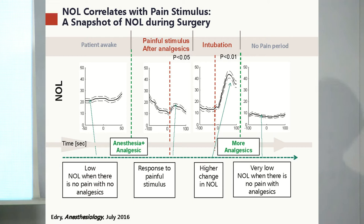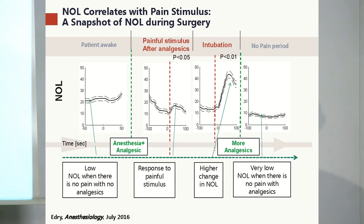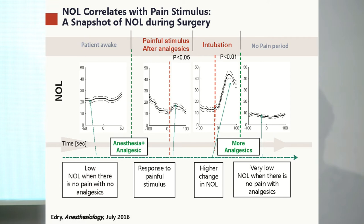On the left, if you have no analgesia and no stimulation, you get a reasonably low value — around 20 out of 100 — and it stays stable as you would expect. If you give patients a good dose of analgesia, say a substantial dose of remifentanil, and then you do something painful to them, nothing happens. That's what you would expect, because you've provided enough analgesia to cover the noxious stimulus.